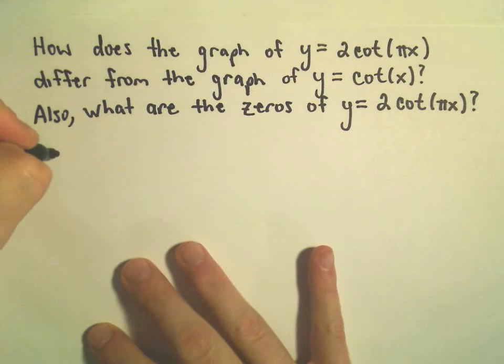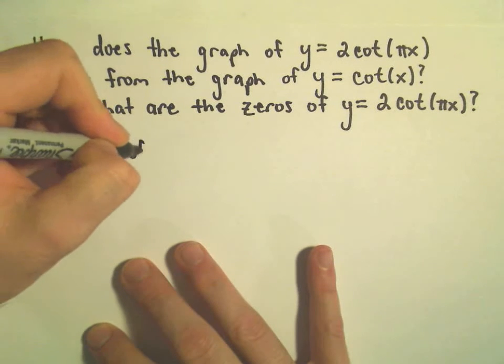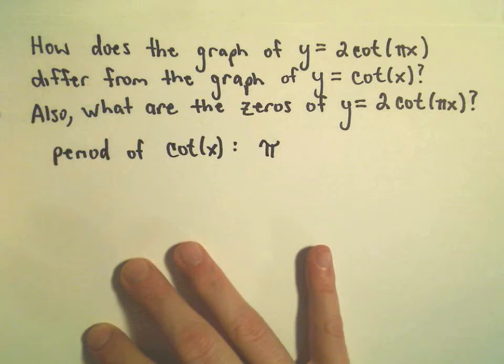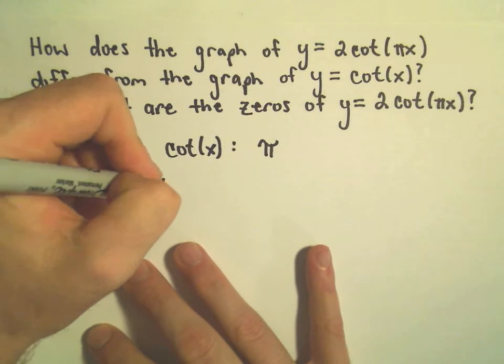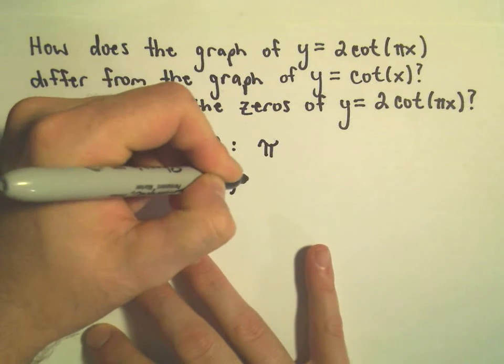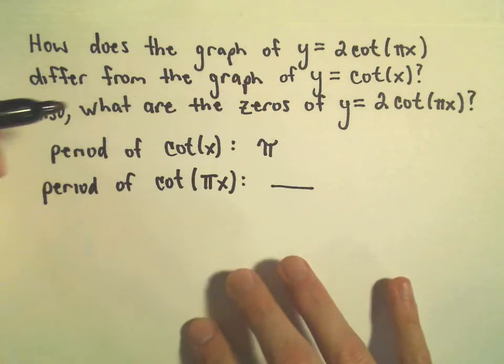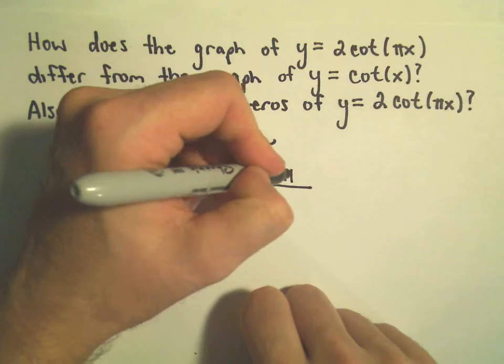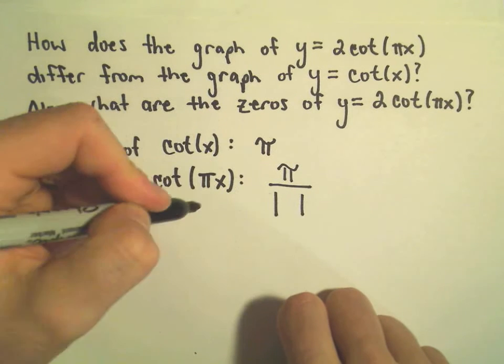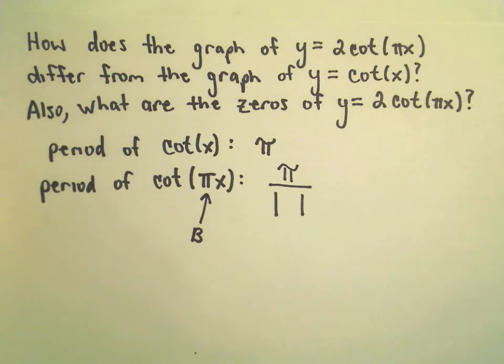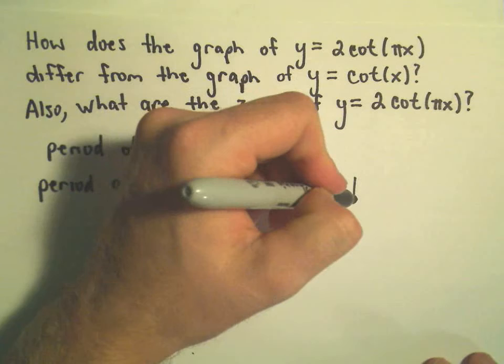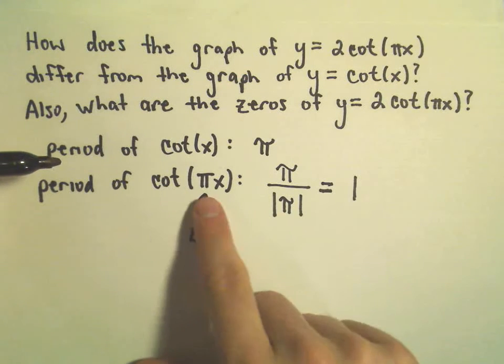Recall that the period of cotangent, the period of regular cot(x), has a period of just π. So the period of cot(πx), we do the same thing as before. We were taking 2π and dividing it by our b. But now, instead of taking 2π, since the original only has period of π, we'll take π and divide it by the absolute value of our b term, which in this case is just π. So really we have π divided by π. Actually we're going to get a period of just 1 for this cot(πx) function.